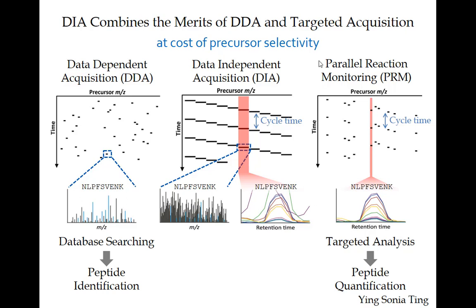People can analyze DIA data in two different ways. Some people will look at DIA data as spectra — in DDA, people take an MS/MS spectrum and try to make an interpretation of it. With DIA, that's more challenging because when you look at the spectra, it's extremely busy. That's a product of having a wide isolation window, and we'll go into that more.